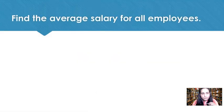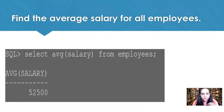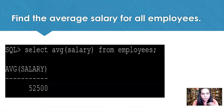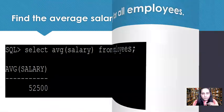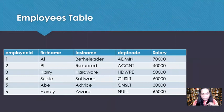To find the average salary for all employees, you can write: SELECT AVG(salary) FROM employees. It gives you $52,500 as the average salary of all employees combined. This is the original employees table that we have created, and you can go ahead and verify the average.